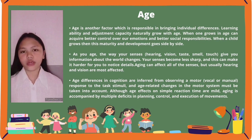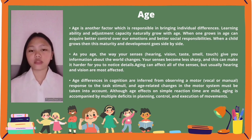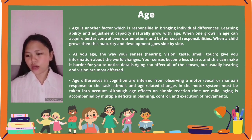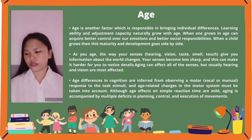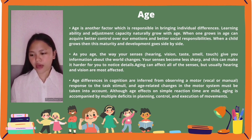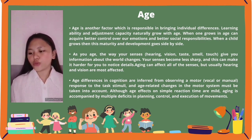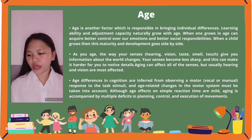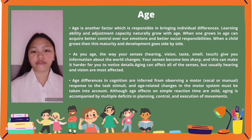As you age, the way your senses — hearing, vision, taste, smell, and touch — give you information about the world changes. Your senses become less sharp, which can make it harder to notice details. Aging can affect all of the senses, but usually hearing and vision are most affected.